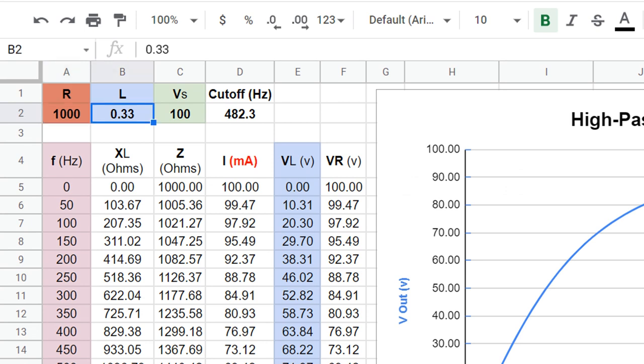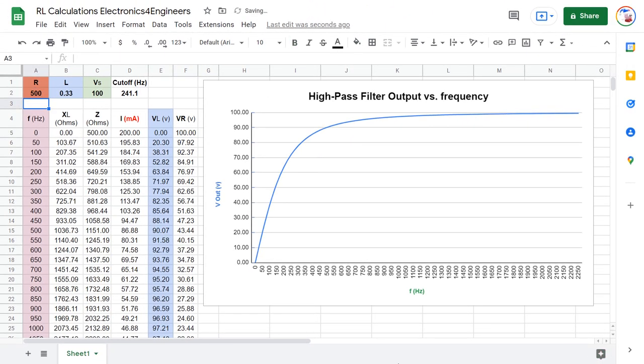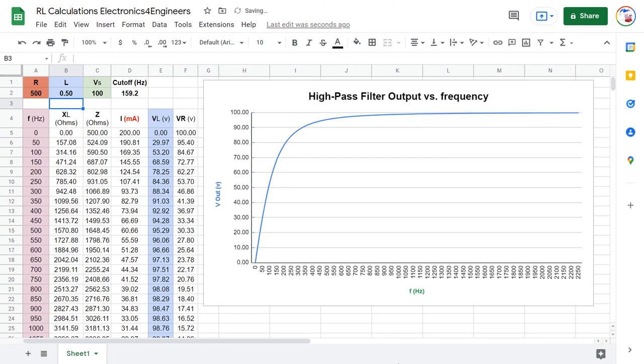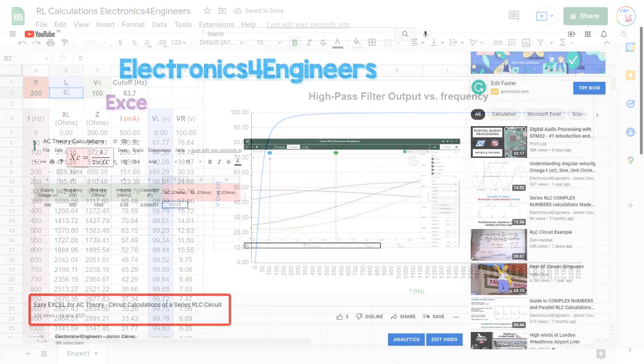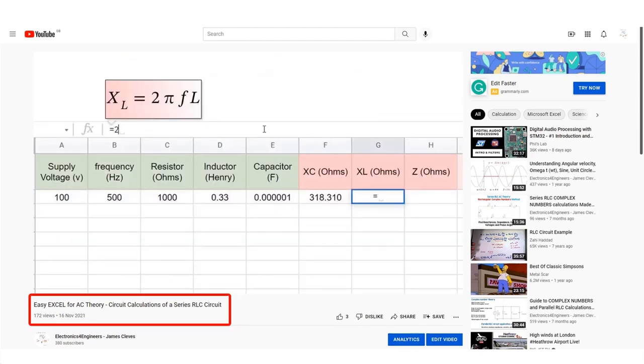I use Excel or Sheets to calculate the cutoff frequency, XL, Z, the current, Vl and Vr, and to plot the output graph against frequency. Changing the value of R, L or Vs immediately updates everything else, including the graph. See my video, Easy Excel for AC Theory, for how to do this. And I'll show you the equation shortly, so you can try it yourself.